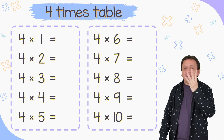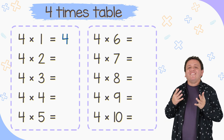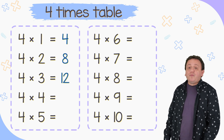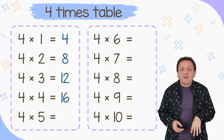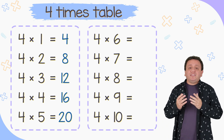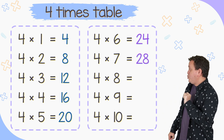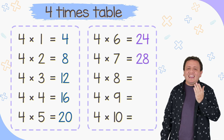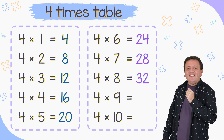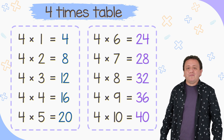Let's continue with the 4 times table. 4 times 1 equals 4. 4 times 2 equals 8. 4 times 3 equals 12. 4 times 4 equals 16. 4 times 5 is equal to 20. 4 times 6 equals 24. 4 times 7 equals 28. 4 times 8 equals 32. 4 times 9 equals 36. And 4 times 10 is equal to 40.